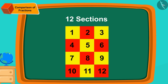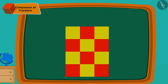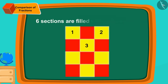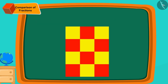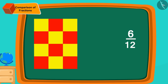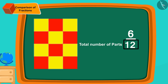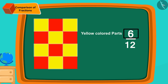Now can you tell how many yellow colored sections are there in the design on Golu's cloth? If you wish, you can stop the video and find the answer. Yes, in Golu's design six sections are filled with yellow color. Let us write it as a fraction — yellow colored sections are six twelfths of the design. The number 12 tells us that the total cloth is divided into 12 equal parts, and six tells us how many parts of it are yellow.